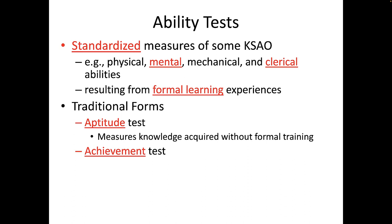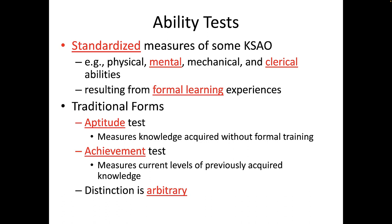The second is the achievement test, which measures current levels of knowledge acquired through formal learning or educational experiences. In reality, the distinction between the two forms of ability tests is arbitrary. All ability tests measure what a person has learned up to the time he or she takes the test. It is not possible to test raw potential — you can only ask respondents about information or experiences they already know. For this reason, the terms aptitude and achievement have been replaced by the term ability.